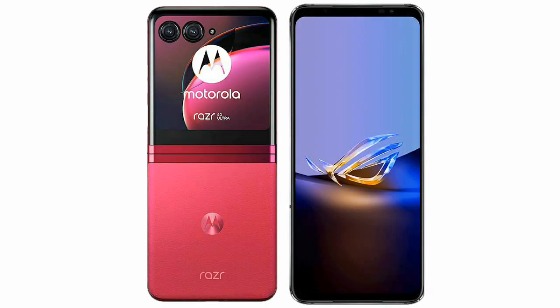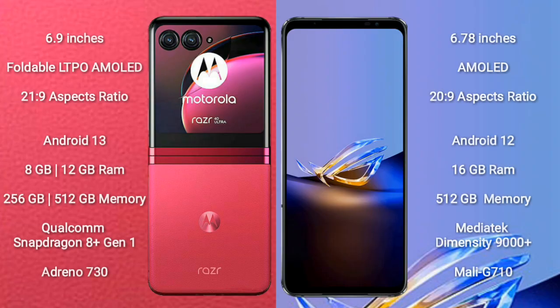I will compare the new Motorola RAZR 40 Ultra with ASUS ROG Phone 6D Ultimate. Motorola RAZR 40 Ultra comes with a 6.9-inch foldable LTPO AMOLED display with an aspect ratio of 21:9. ASUS ROG Phone 6D Ultimate features a 6.78-inch AMOLED display, also with a 21:9 aspect ratio.